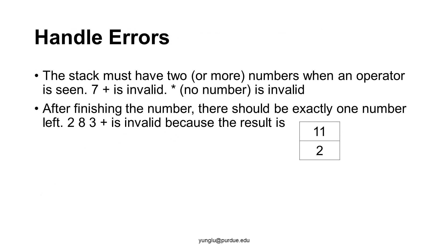It is possible that the input has errors. An operator must come after two operands. If the program sees an operator but the stack does not have two or more numbers, this is an error. For example, with input '7 plus,' when the program sees the plus sign there is only one number, 7, in the stack — this is invalid. Another example is a single multiplication sign with no numbers in the stack, which is also invalid.